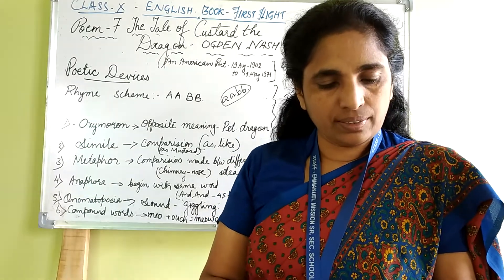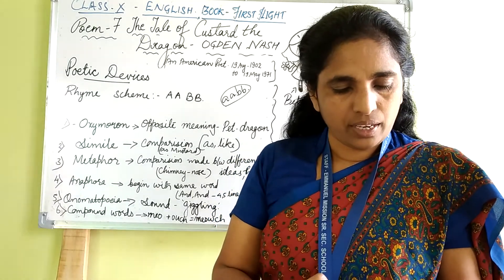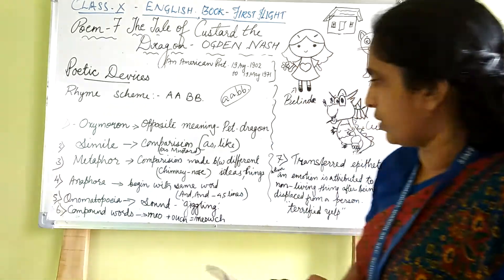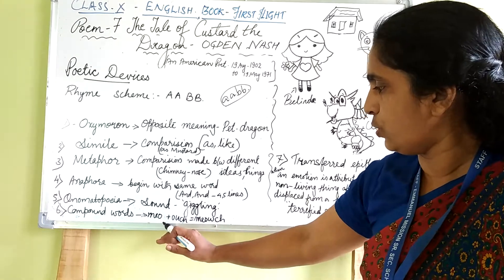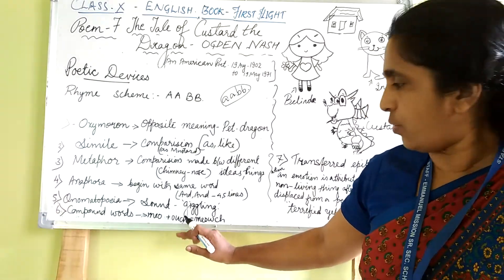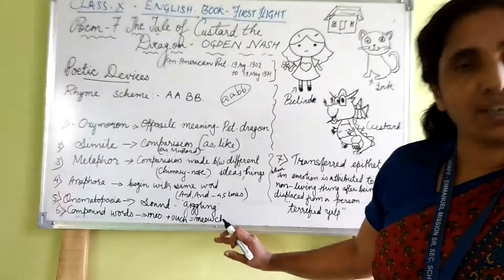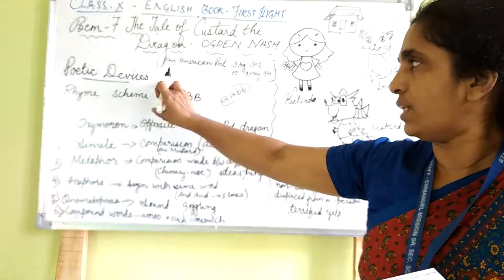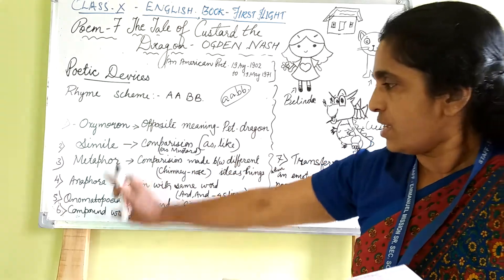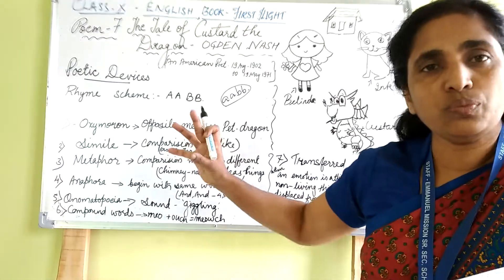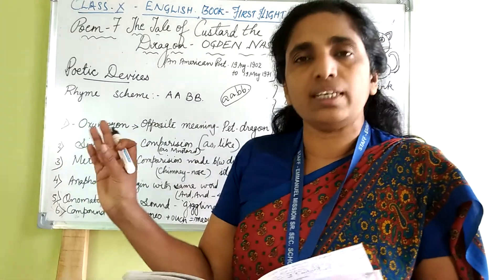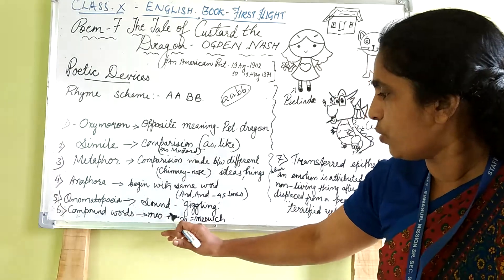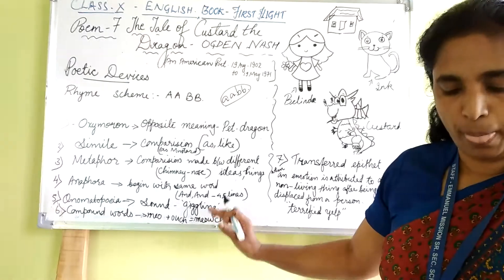In the seventh stanza, third line, there is the word 'mouch' — that is a compound word. Two words or two sounds join together to make a new word. So 'mo' and 'ouch' combine to make 'mouch' — that is called a compound word, a poetic device where two words merge to form one.